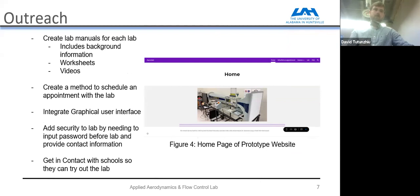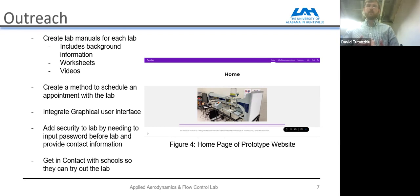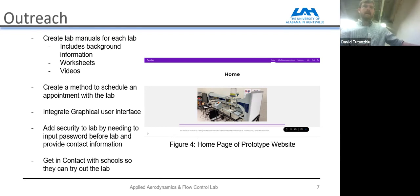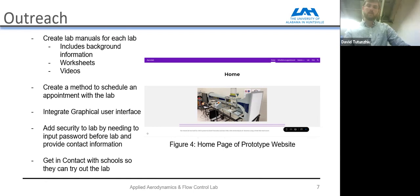As far as outreach goes, this project is in part an outreach effort to work with local or distance high schools. We would create a lab manual for each lab including background information, worksheets, and videos to get students up to speed. We need to create a method to schedule an appointment with the lab — so far we've been using a simple form sheet. Students would then have an appointment to log on and access the virtual lab. We'll integrate a graphical user interface and add a password so that only authorized users can access and operate the wind tunnel, for safety reasons.